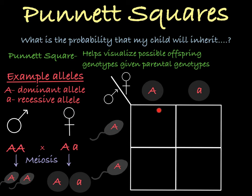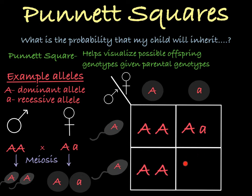This box would have the big A allele from the mother and the big A allele from the father. This box would have the big A allele from dad and little a from mom, and this one would receive big A from dad and little a from mom as well.